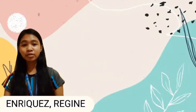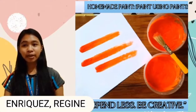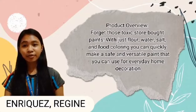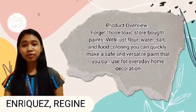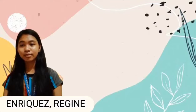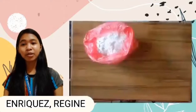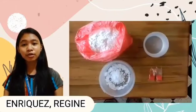Good day everyone, I am Eugenio Requez and the title of my product is Homemade Paint — I Paint Using Paints — with the theme: Spend Less, Be Creative. Using just store-bought basics which are flour, water, salt, and food coloring, you can quickly make a safe and versatile paint that can be used for everyday home decoration, safe for children of all ages. To make the paint, you need basic household ingredients found in your kitchen: flour, water, salt, and food coloring.